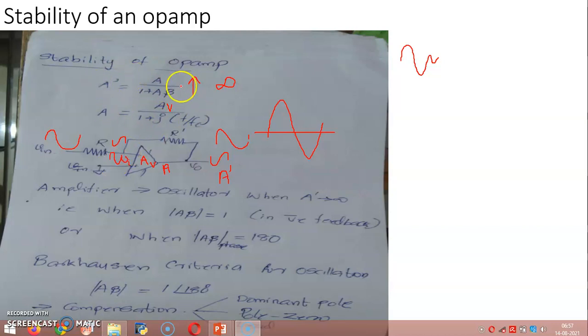Clearly the gain of this amplifier will be tending to infinity when the denominator tends to zero. That happens when the magnitude of A beta is minus one, that means A beta has a magnitude of one and a phase angle of 180 degrees.